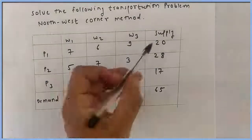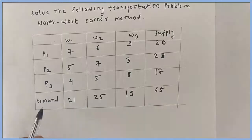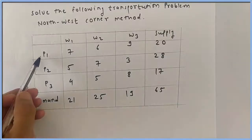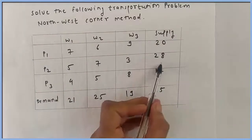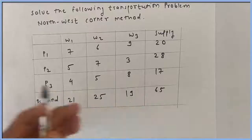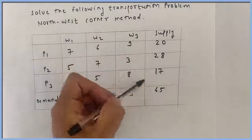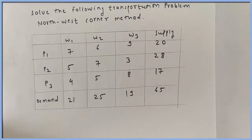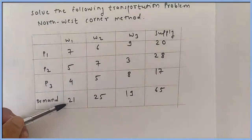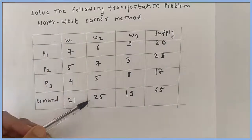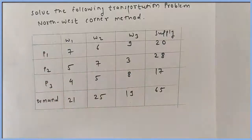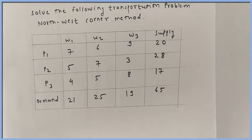There are two important things: supply and demand. P1 supply is 20, P2 supply is 28, P3 supply is 70. If you calculate the total supply, total supply is equal to 65. Whereas W1 demand is 21, W2 demand is 25, W3 demand is 19. If you calculate the total demand, it is equal to 65.